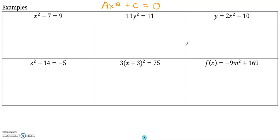We're going to go ahead and set our equation equal to 0. So I'm going to take a look at the first example, which means I'm going to subtract 9 on both sides. I'll get my x² - 16 equals 0.